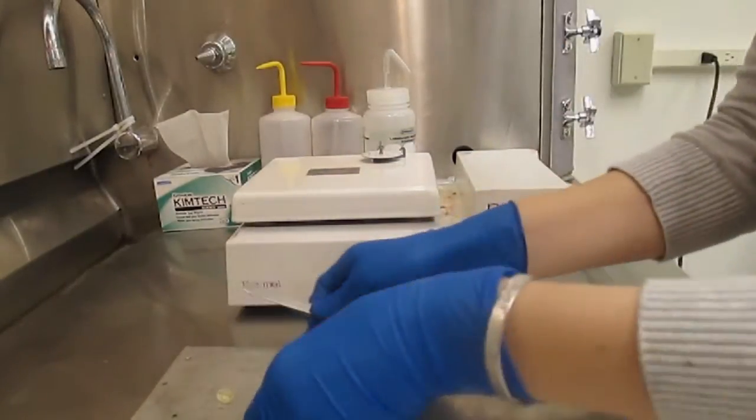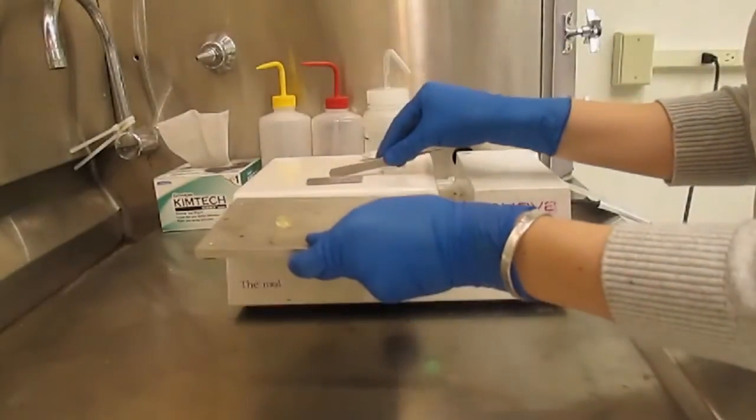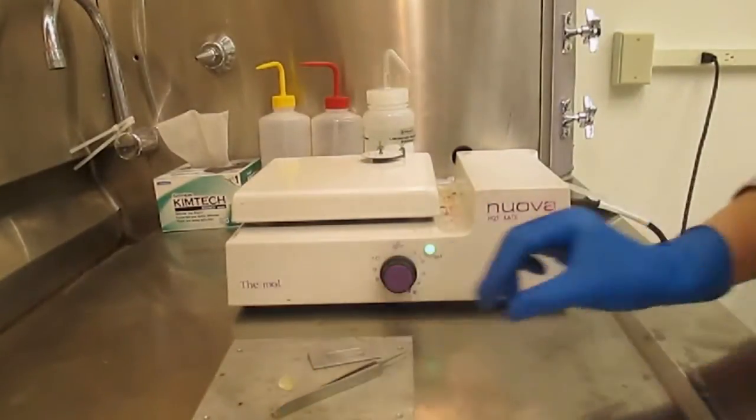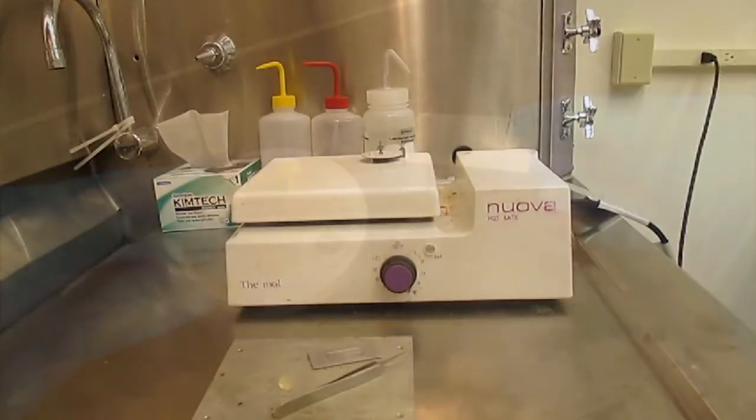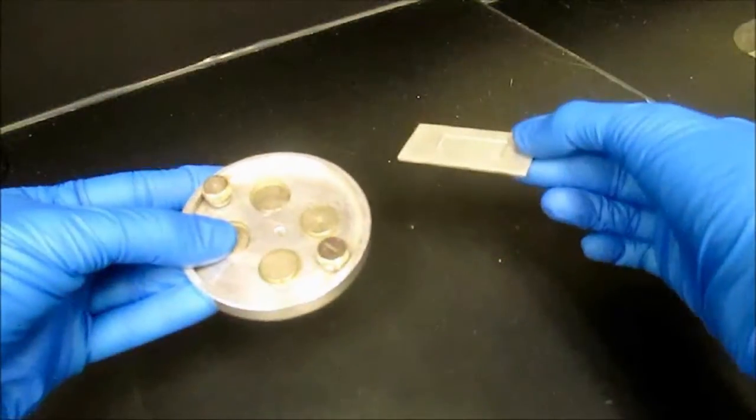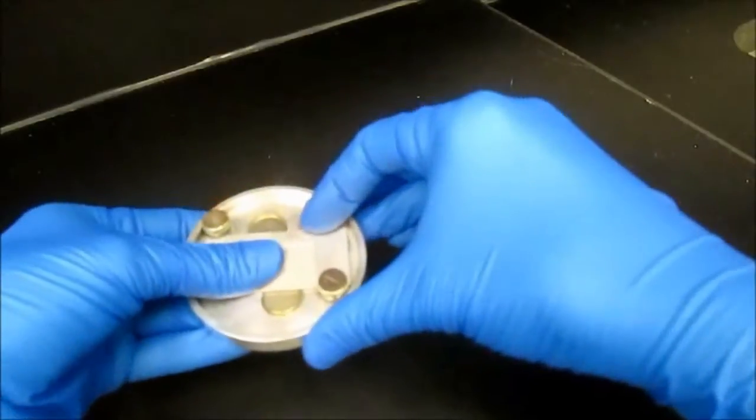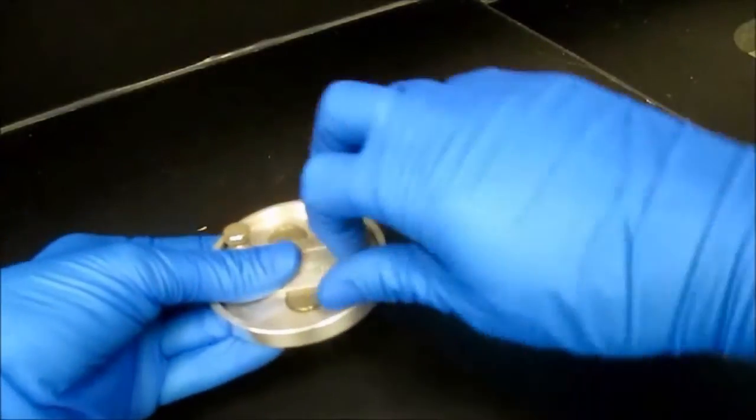Remove the specimen plate from the hot plate and allow it to cool to room temperature. Place the specimen plate under the thumb screws of the disk cutter's specimen container assembly. Tighten the screws firmly.